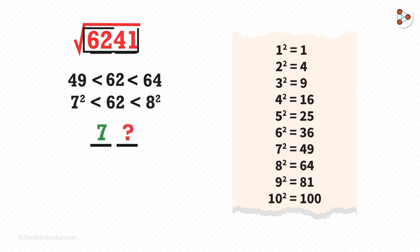Now how do we get the units digit? In the number, the units digit is 1. And if we observe the table, then the units digit of 1 squared is 1 and the units digit of 9 squared is also 1. Then what will be the answer? 71 or 79?